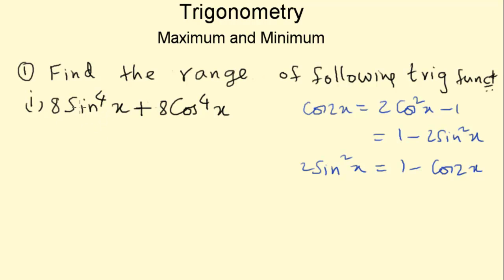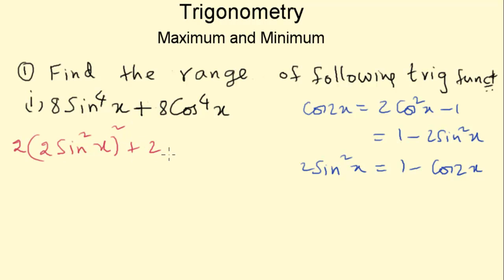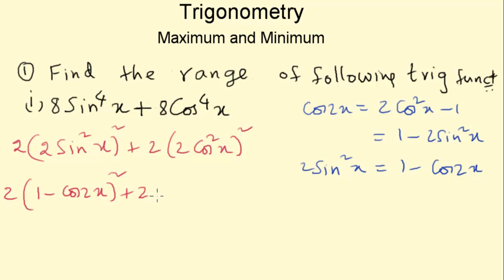Here we have sin to the power 4x, so we can write 4 sin to the power 4x as 2 sin square x, whole square. Similarly, we get 2 times 2 cos square x, whole square. Substituting 2 sin square x, we get 2 times (1 minus cos 2x) whole square plus 2 times (1 plus cos 2x) whole square.